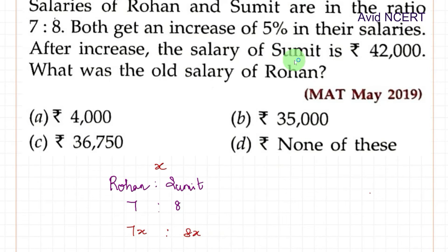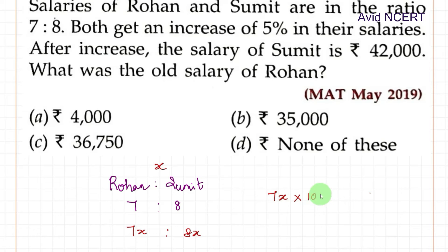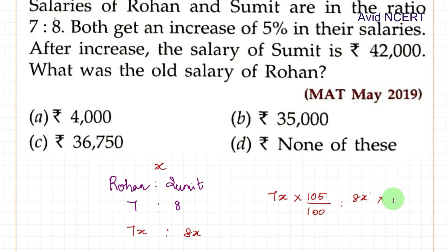From the next sentence, if it is increased by 5%, that means we multiply by 100 plus 5%, which is 105%. So 105% is nothing but 105 by 100. This applies to both: 7x times 105 by 100, and Sumit's 8x times 105 by 100.